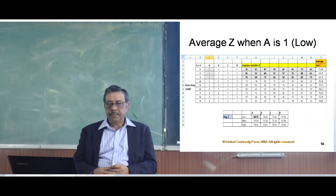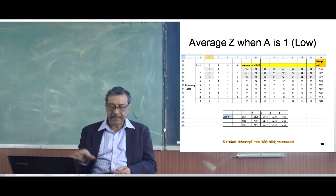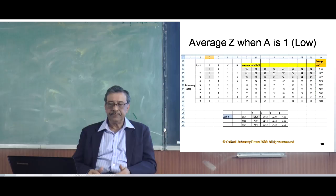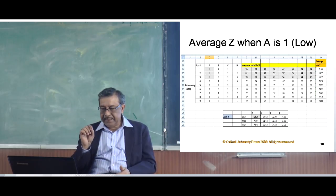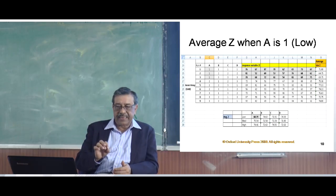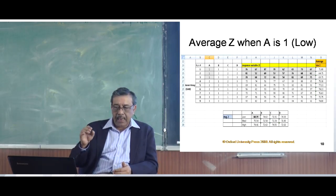We go back to the original table that we did before. There are 9 runs and we have taken the output variables in that table. In this slide you will see a smaller table at the lower part of the slide. In this table, what we are trying to do is enter the average value of z, where a, b, c and d are taken.